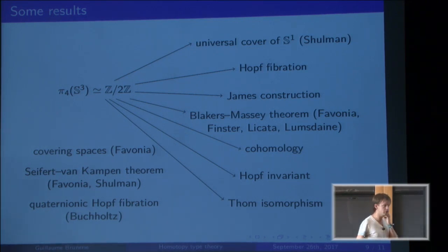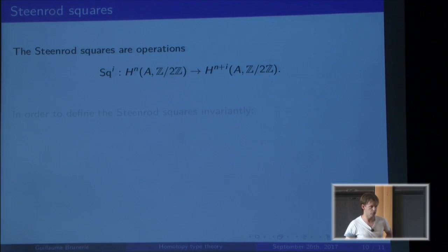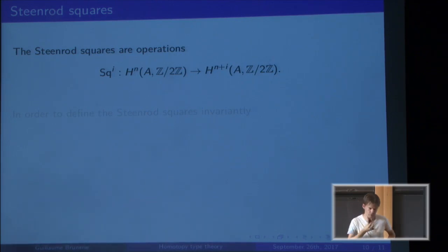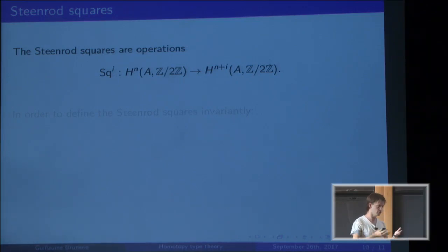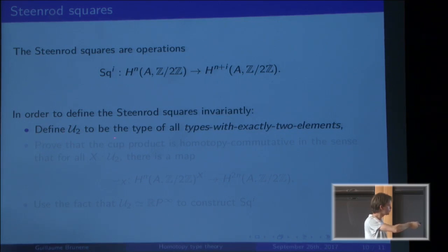To finish, I'll show another example I'm currently working on: the Steenrod squares. The Steenrod squares are operations on ℤ/2 cohomology, where Sq^i goes from H^n to H^{n+i}. Most of the usual definitions I couldn't manage to reproduce directly in this setting, since they typically use some simplicial machinery that didn't seem to work, but there is another approach.